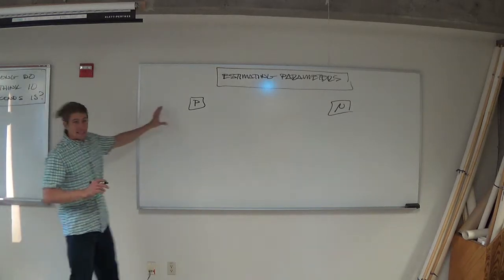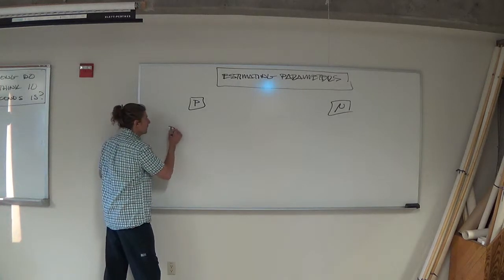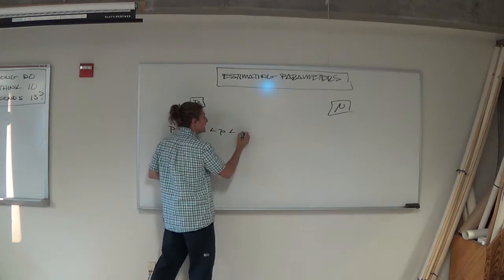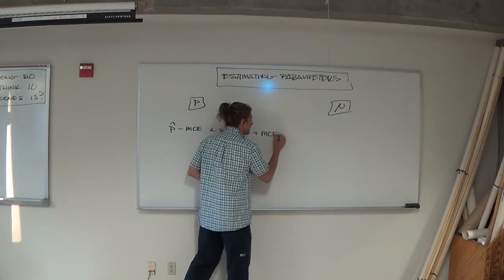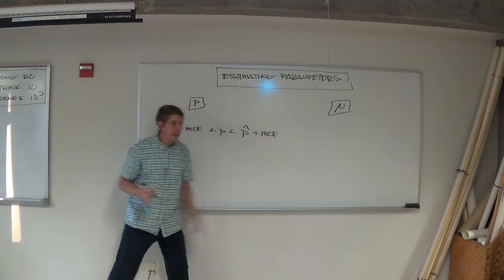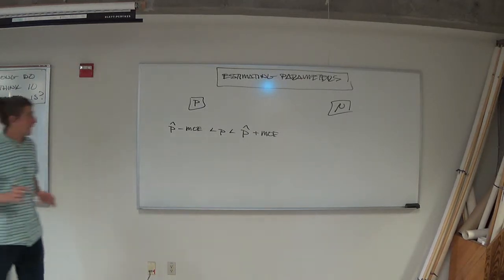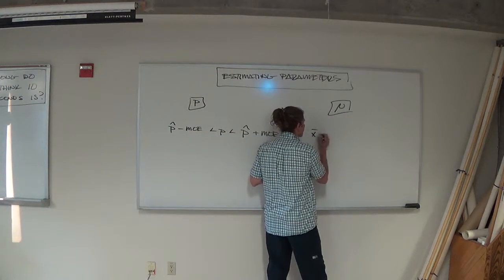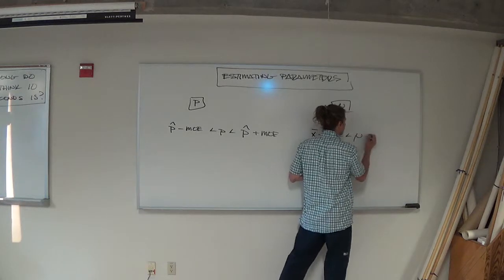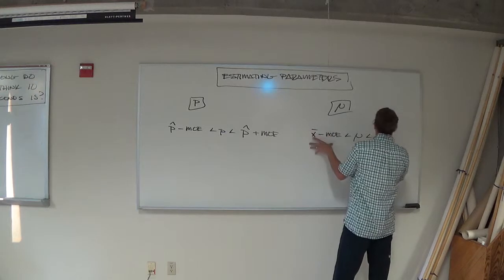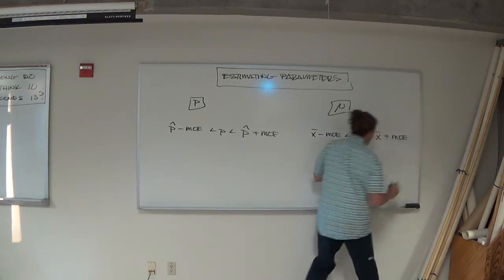As far as estimating little p, you have to do p hat and its margin of error and the idea is that little p is going to be p hat minus the margin of error and p hat plus the margin of error 95% of the time or in Crony's case 99% of the time. That's the idea. Same as mu. Mu is going to be 95% of the time within a confidence interval that's centered around x bar's margin of error.